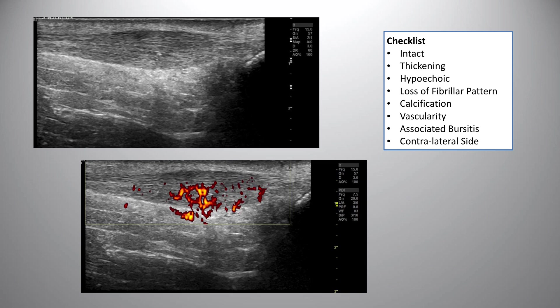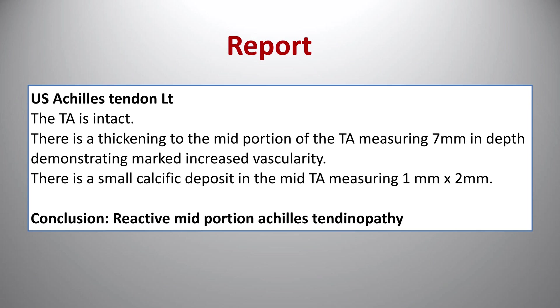The tendon is definitely thickened and fusiform, measuring around 7 mm — normal is around 4 to 5 mm. There is loss of the fibrillar pattern with a disorganised structure, calcification, and vascularity on Doppler. There is no sign of bursitis. Based on the imaging findings, the patient has mid-portion Achilles tendinopathy, more in the reactive stage — appearing more acute. Ultrasound report: Achilles intact, thickening of the mid-portion at 7 mm, marked vascularity, and calcification on transverse view measuring approximately 1 mm by 2 mm. Consistent with reactive mid-portion Achilles tendinopathy.